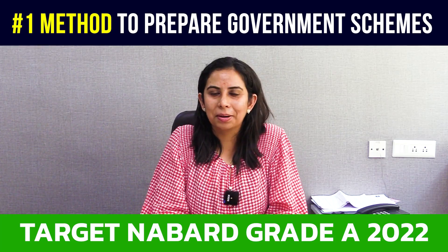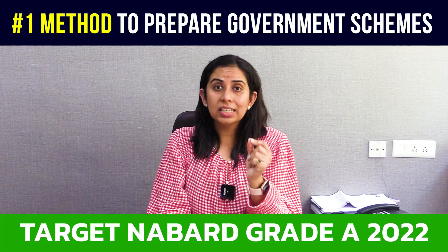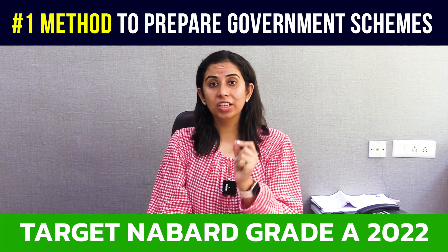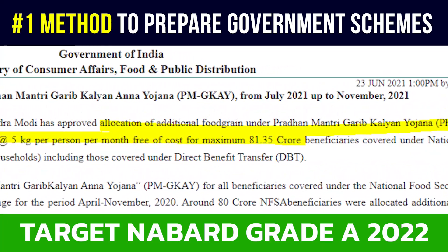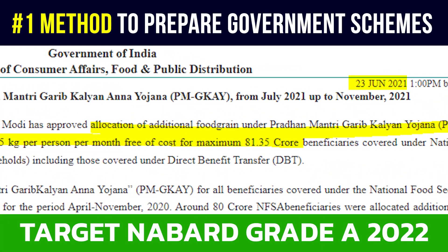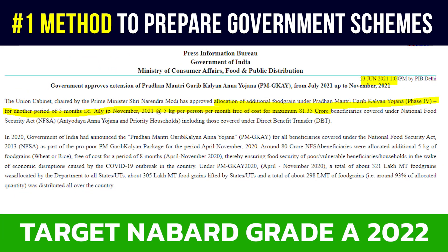There are two reasons for the same. Very first, this scheme was in news in the month of June 2021 when the examination was in September 2021. Secondly, this news can be directly linked to the ESI syllabus under the topic Issues in Food Security.